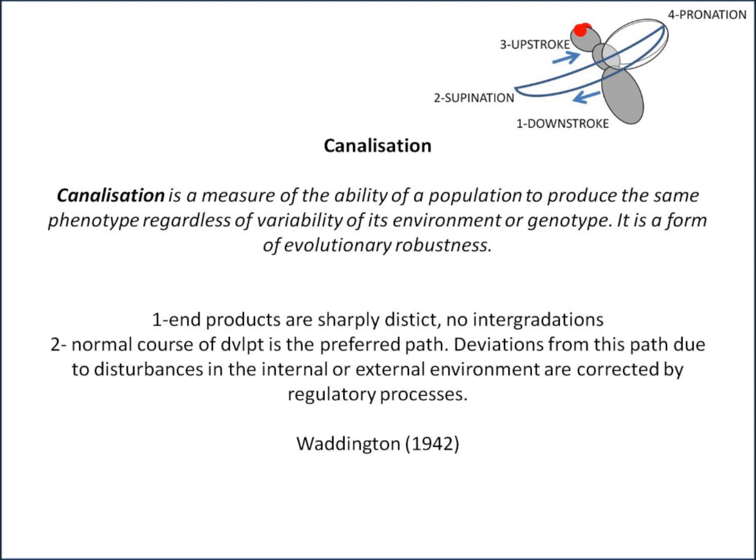Waddington emphasised two points during organism development. First, the end products are sharply distinct — there are no integrations. Secondly, the normal course of development is the preferred path. Deviations from this path, whether due to internal or external environmental disturbances, are corrected by regulatory processes, and this is true of distinct types of tissue but also at the organismic level.